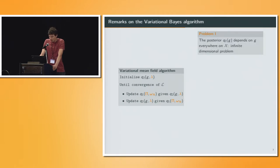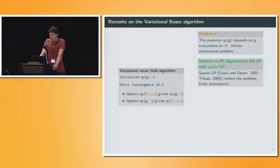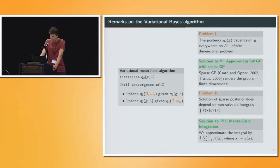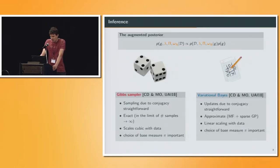In this scheme, there are two problems I just want to speak about. First of all, the posterior of the function g depends actually on g everywhere on x, so we have an infinite dimensional inference problem. The solution is we approximate the full GP with a sparse one, which renders the problem to a finite problem. The second problem is to find the sparse GP, we still need to solve an integral over the space with respect to our base measure, which we cannot solve analytically, so we invoke Monte Carlo integration, where we sample from the base measure pi and then take the empirical average for the integral.